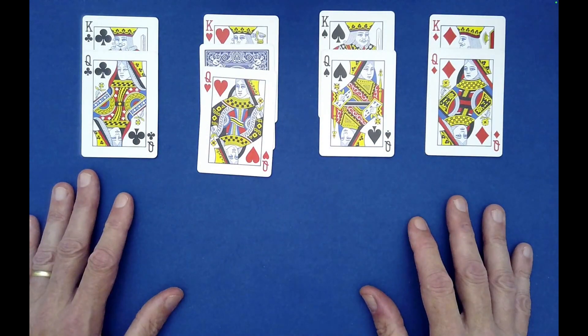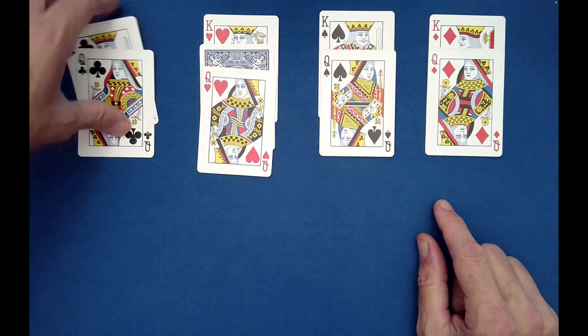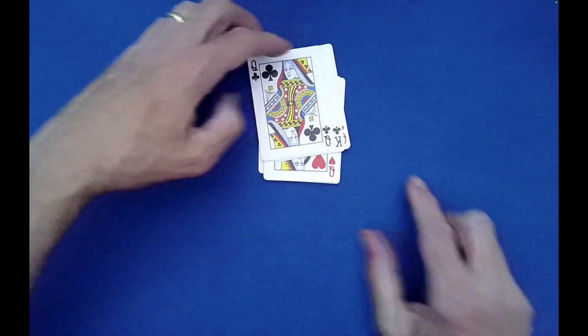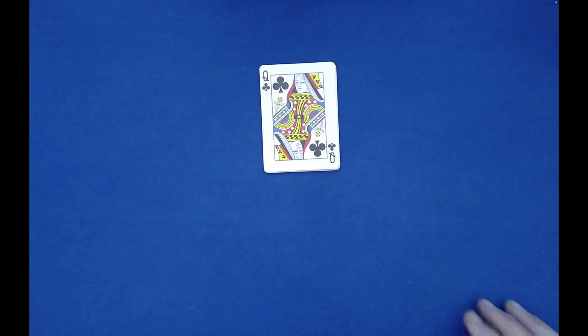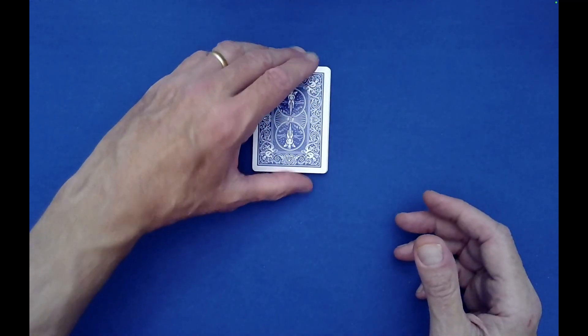And then have them randomly stack these four piles in whatever order they would like. Maybe they'll pick up this one and that one, then this one, then that one. It truly is a free choice. Then simply have them turn the packet face down like this, and then have you turn around as the performer.